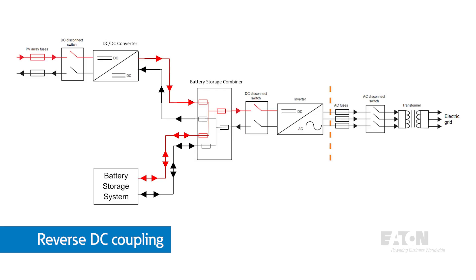Reverse DC coupling is similar to DC coupling, except that instead of a DC-DC converter on the battery storage system, the DC-DC converter is on the PV circuits before connecting to the battery storage circuit. This is the least commonly used design, largely due to a lack of equipment suitable for this application. In reverse DC coupling, PV-listed overcurrent protective devices are required up to the input of the DC-DC converter, and then everything on the output of the converter is required to be suitable for battery storage applications.